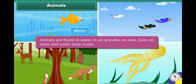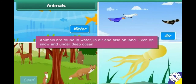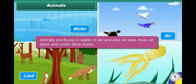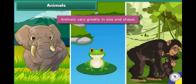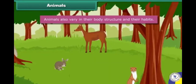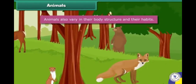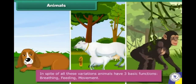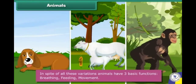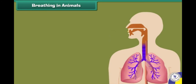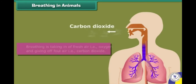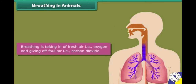Animals are found in water, in air, and also on land, even on snow and under the deep ocean. Animals vary greatly in size and shape, and also in their body structure and their habits. In spite of all these variations, animals have three basic functions: breathing, feeding, and movement.